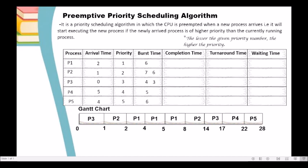Since we are now done with our Gantt chart, we can determine the completion time of each process. P1's completion time is 8, P2's completion time is 14, P3's completion time is 17, P4's completion time is 22, and P5's completion time is 28.